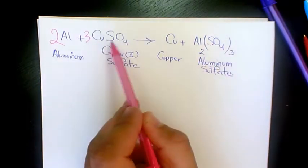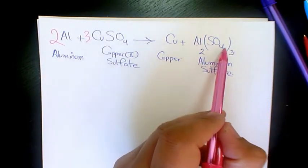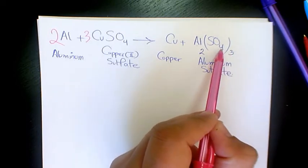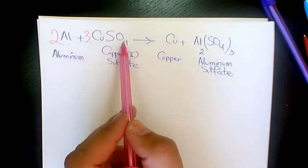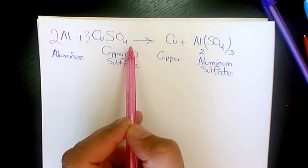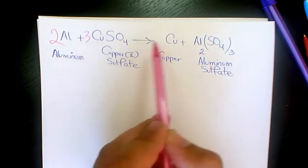we have 3 times 4, it's gonna be 12 as well. So oxygen is also balanced. But if you look again at copper, we have three in the reactant side